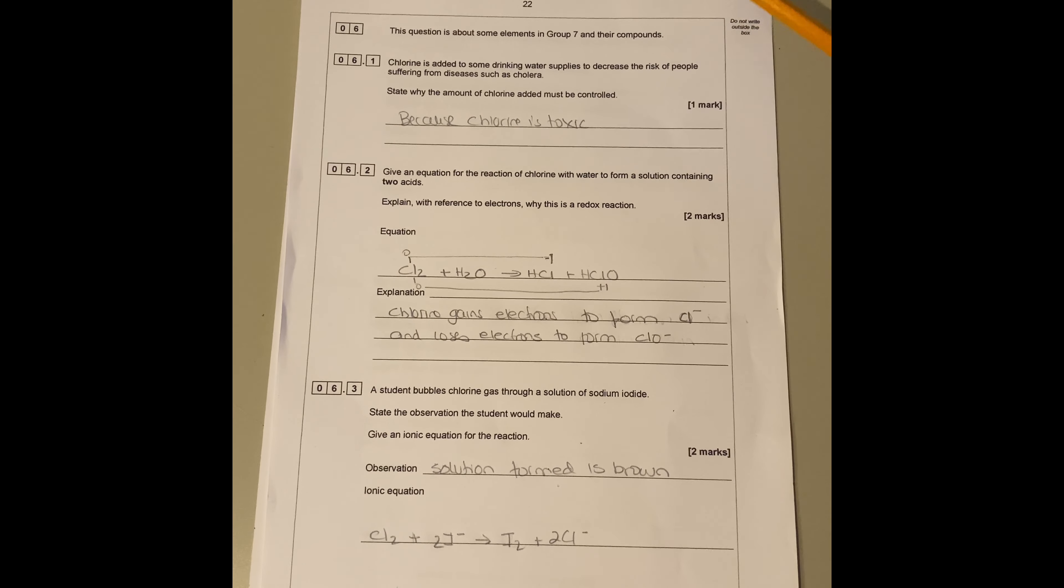Right, we're going to question number six now. The question is about some elements group seven and compounds. Chlorine is added to some drinking water supplies to decrease the risk of people suffering from diseases such as cholera.